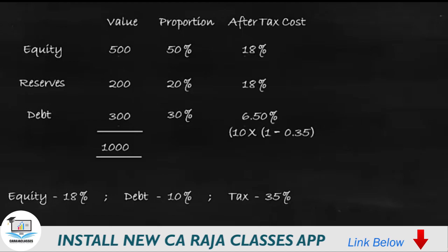With this information, we can calculate the weighted cost of capital, which is nothing but after-tax cost multiplied by proportion. For equity, it will be 18 percent multiplied by 50 percent, which is 9 percent. For reserves, it is 18 percent multiplied by 20 percent, which is 3.6 percent. And for debt, it is 6.5 percent multiplied by 30 percent, which is 1.95 percent. If you total all three weighted costs of capital, what will you get?